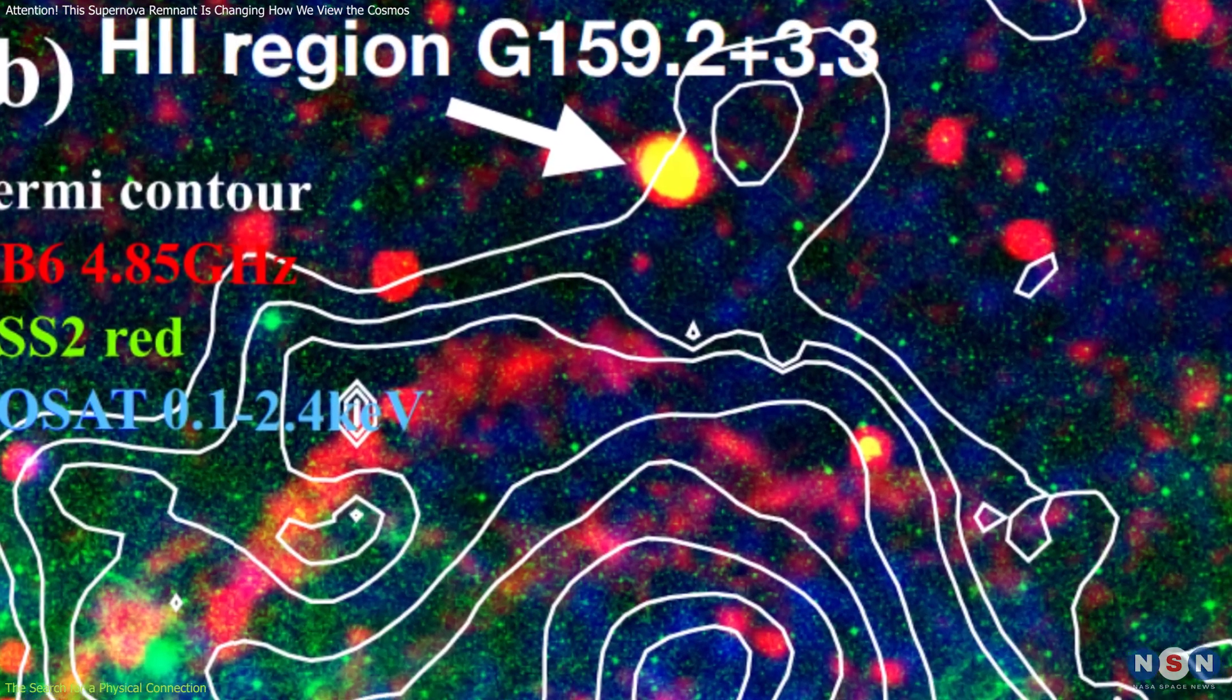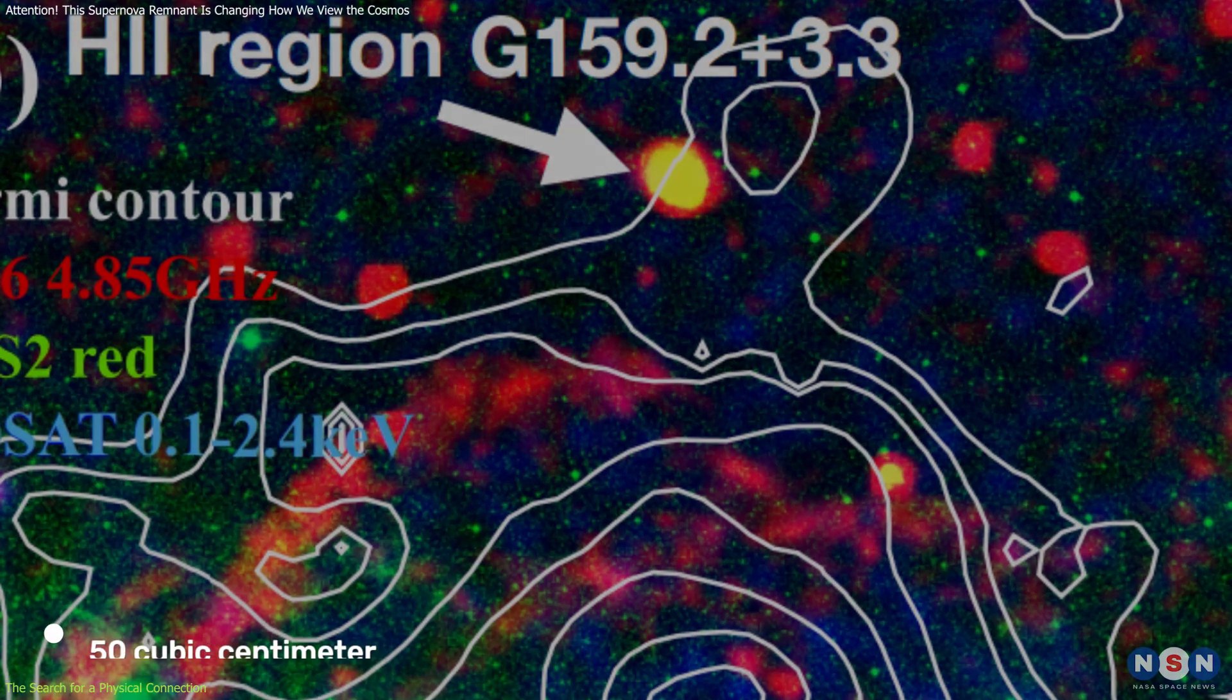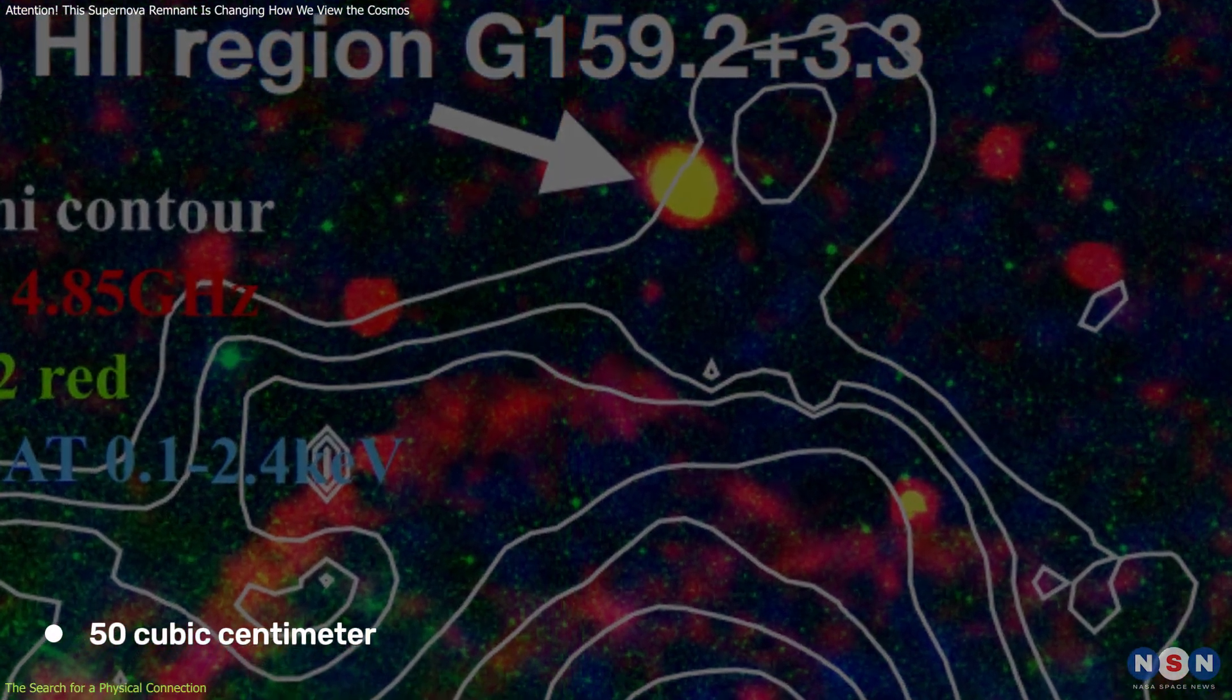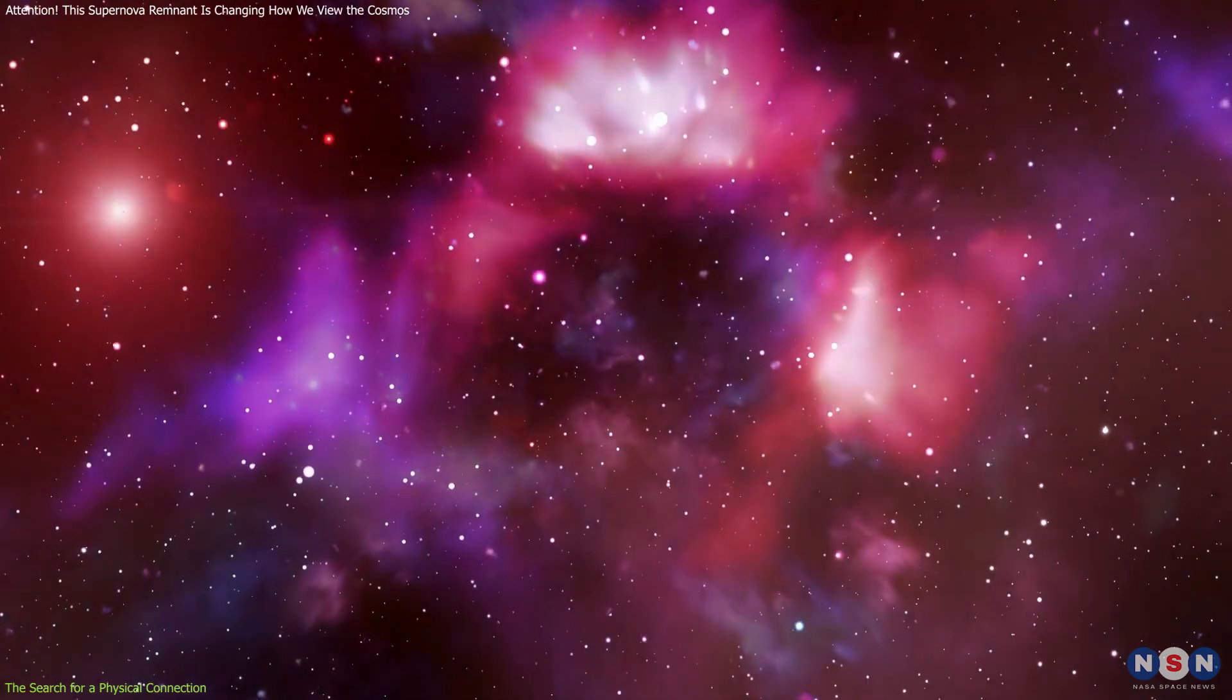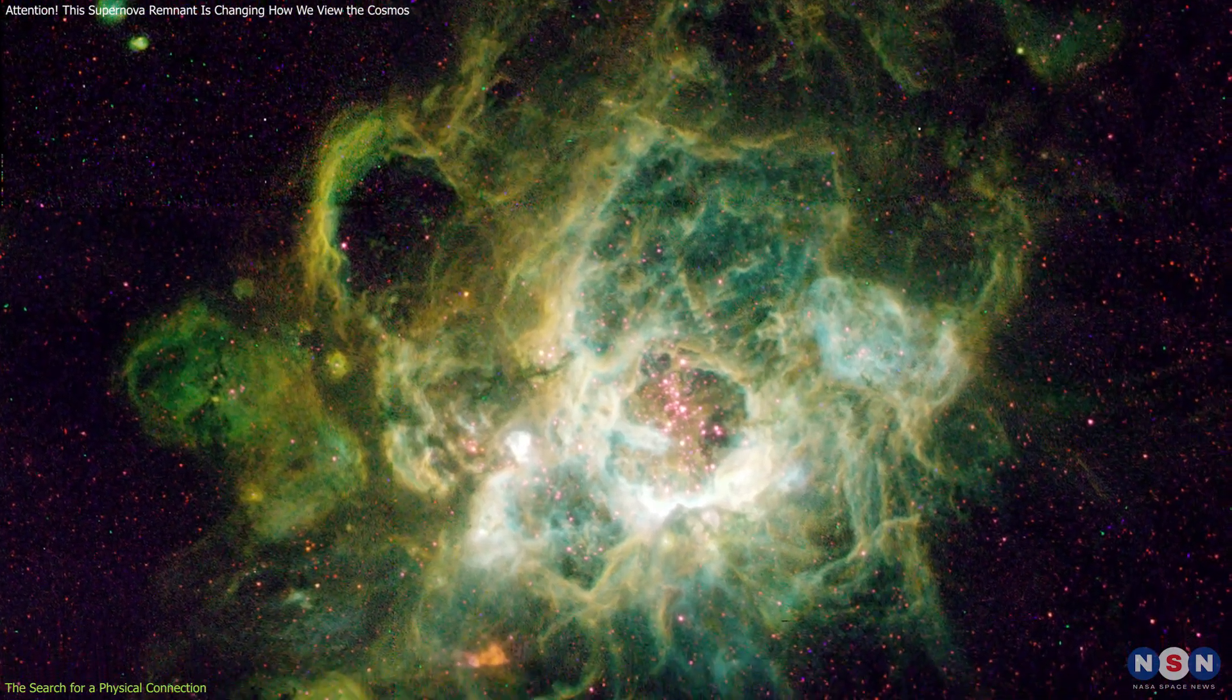By contrast, the H2 region had a lower median density of around 50 cubic centimeters. This difference in density led the researchers to conclude that this region is likely located much farther away from Hb9 than previously thought.